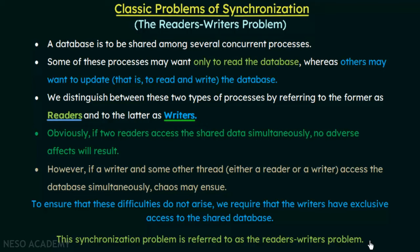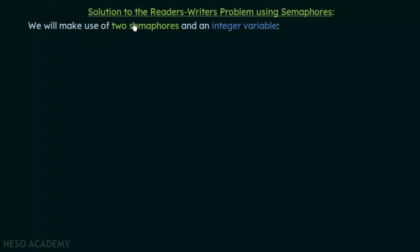This synchronization problem is referred to as the readers-writers problem. Concurrent processes are trying to either read or write data simultaneously — if both are just reading, there is no problem, but when one is writing and another process tries to either read or write, we have a problem. Using semaphores, we can solve this problem.